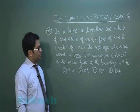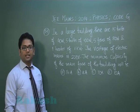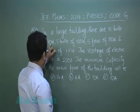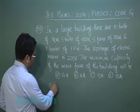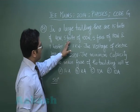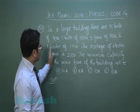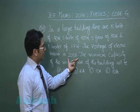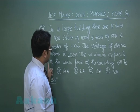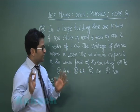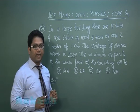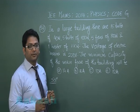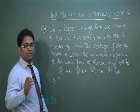Question 33 is from current electricity. In a large building there are 15 bulbs of 40 W, 5 bulbs of 100 W, 5 fans of 80 W, and 1 heater of 1 kilowatt. The voltage of the electric mains is 220 V. We need to find the minimum capacity of the main fuse. Since household wiring is in parallel, every unit gets a supply of 220 V. We need to find the total wattage consumption.